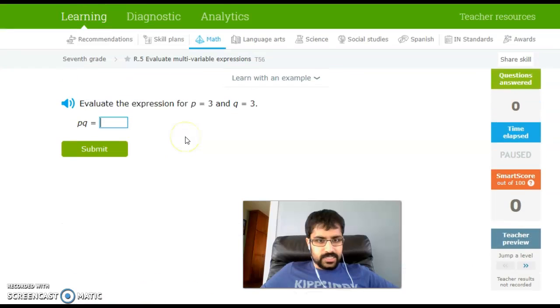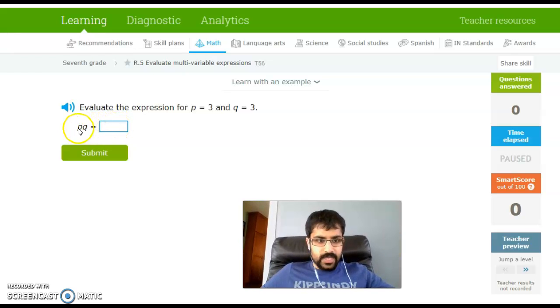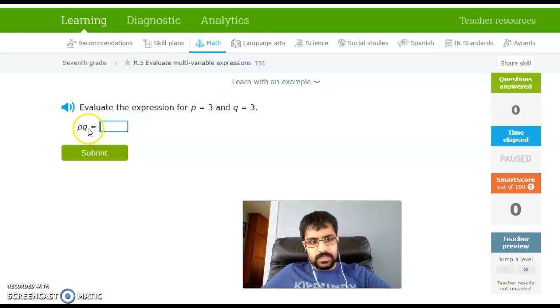All right, let's try a few examples together. So it tells me to evaluate the expression for p equals 3 and q equals 3. Since they're right next to each other, I know that when they're right next to each other like that, they're touching. That really means they're being multiplied together. So I can plug in 3 and 3, multiply 3 times 3, and my answer is 9.